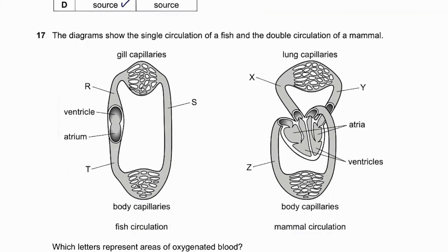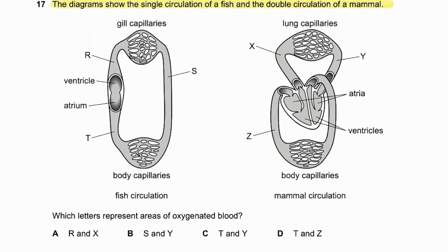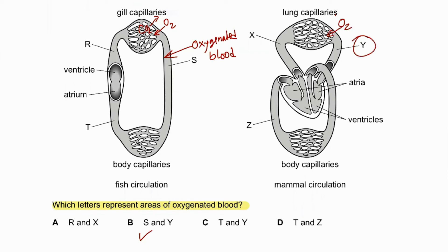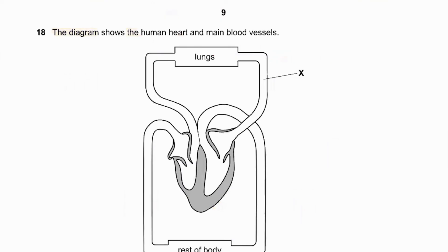Question number seventeen: the diagram shows single circulation of a fish and double circulation of a mammal. Which letters represent areas of oxygenated blood? In fish, deoxygenated blood is pumped to gill capillaries where it becomes oxygenated, so S carries oxygenated blood. In mammals, Y — the blood after the lungs — also carries oxygenated blood. So S and Y — answer B — is correct.